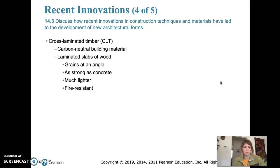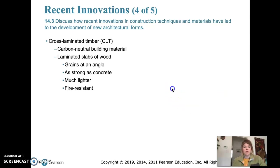Cross laminated timber, or CLT, uses wood — a traditional material — in a new way. It's made by laminating slabs of wood with their grains at an angle to each other, which makes it as strong as concrete but much lighter and more flexible. It's also fire resistant and resistant to earthquakes because of its built-in flexibility. If the trees are harvested from sustainable forests, it's considered a carbon neutral building material.